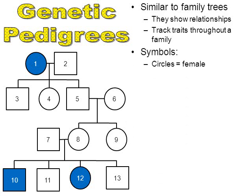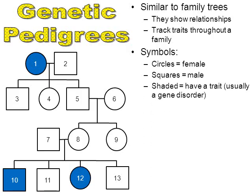Here we have an example of a pedigree. Notice the various symbols: circles represent women, and squares represent men. Some circles and squares are shaded in — in this case, blue. Whenever you see a shaded symbol in a pedigree, that means that person has a trait, usually a genetic disorder. So perhaps persons 1, 10, and 12 have a disorder like sickle cell disease.